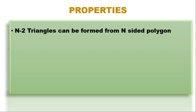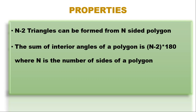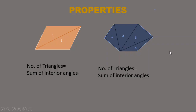There are some important properties of polygons. First, if we have a polygon with n sides, we can make n minus 2 triangles. For example, an octagon has eight sides, so we can make six triangles. The sum of the interior angles of a polygon is (n minus 2) multiplied by 180, because we can always make n minus 2 triangles from an n-sided polygon, and the sum of interior angles of a triangle is 180 degrees.